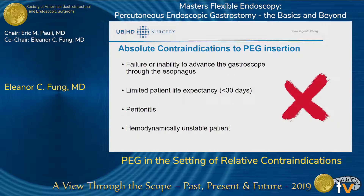We'll go through the absolute contraindications first. One is failure or inability to advance the gastroscope through the esophagus — either if the patient has severe trismus, a lockjaw that prevents putting the gastroscope in. That would preclude putting a PEG tube in. Limited patient life expectancy of less than 30 days is also an absolute contraindication.